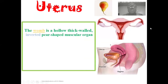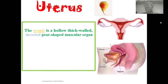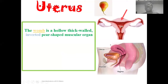The uterus is also referred to as the womb. It is a hollow thick-walled pear-shaped organ, and this pear-shaped configuration is placed in an inverted position. Looking at the image of a pear here and comparing it to the uterus in the lower image, you can see that the uterus takes a pear-shaped configuration but in an inverted pattern — they have the same alignment.